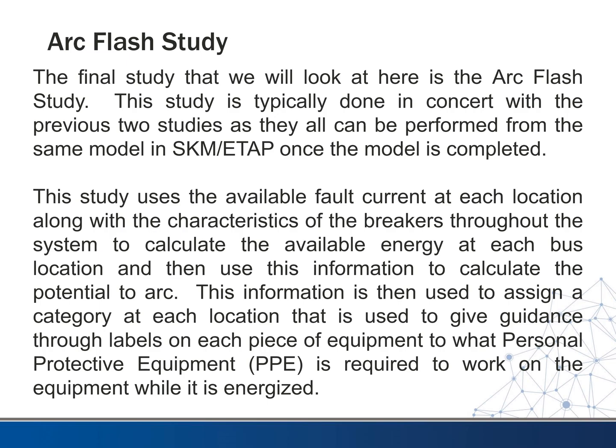We use this information to calculate the potential to arc. There is always a chance that when you're working on energized equipment with tools, you could cause something to arc over — even without directly touching it, you could get close enough for it to arc over to you. Once we make this calculation, the information is used to assign a category defined in NFPA 70E, which is the electrical safety code, at each location.